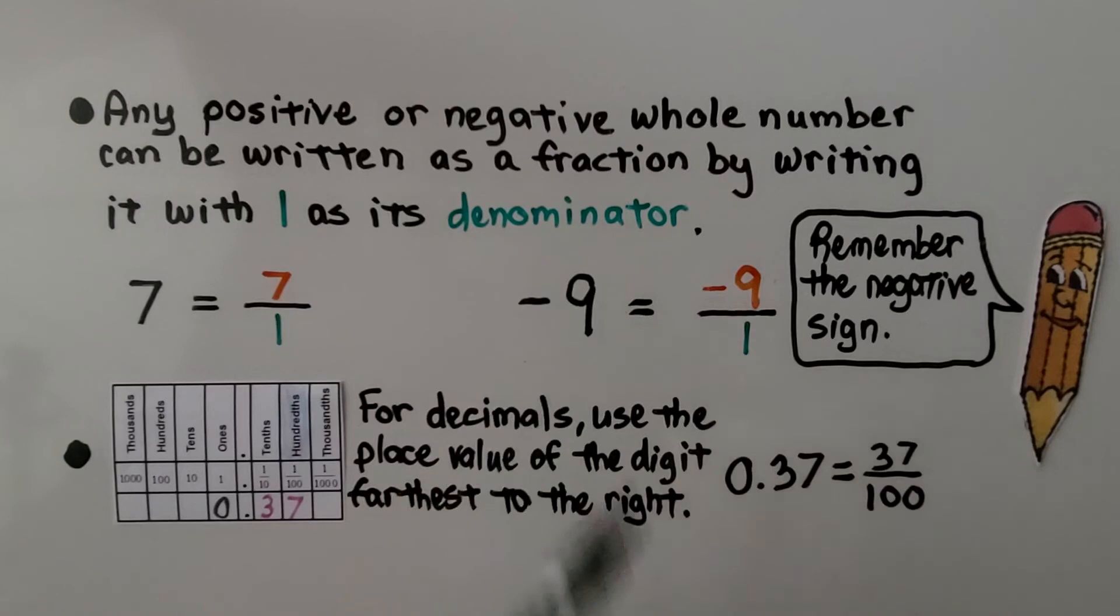And if you remember decimals, for decimals, we use the place value of the digit farthest to the right. So if we have 37 hundredths, the 7 is in the hundredths place, we can write it as 37 hundredths.